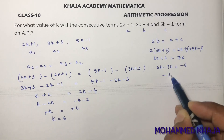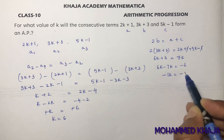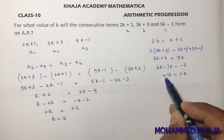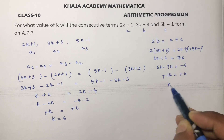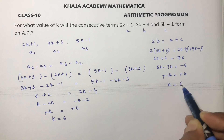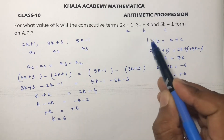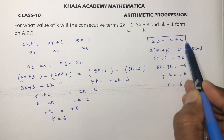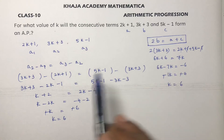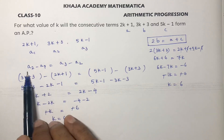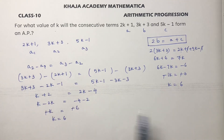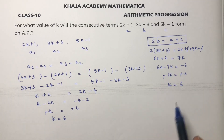So 6k minus 7k equals minus 6, giving minus k equals minus 6, the negatives cancel, and k equals 6. So if A, B, C are in AP then 2b equals a plus c. Otherwise use a2 minus a1 equals a3 minus a2. Therefore the value of k is 6.